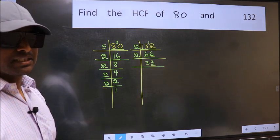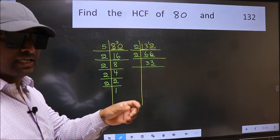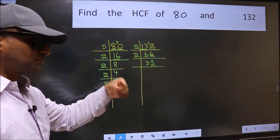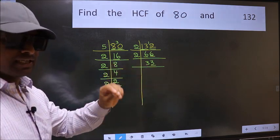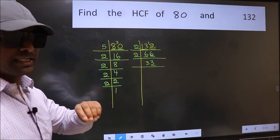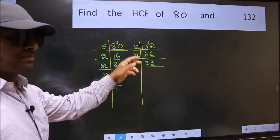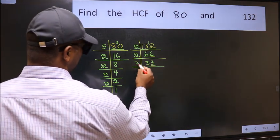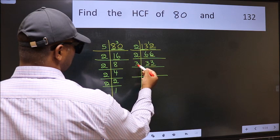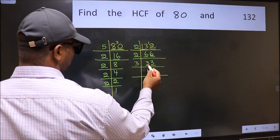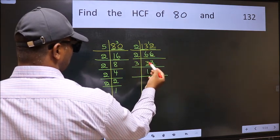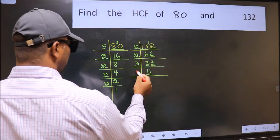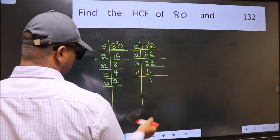To check divisibility by 3, we should add the digits. 3 plus 3, we get 6. And 6 is divisible by 3. So this number is also divisible by 3. So take 3. First number 3, when do we get 3 in 3 table? 3 once 3. The other number 3, when do we get 3 in 3 table? 3 once 3. Now 11, 11 is a prime number, so 11 once 11.